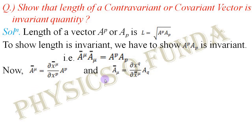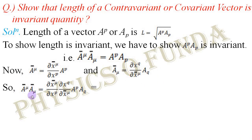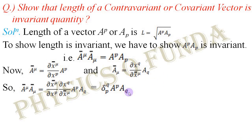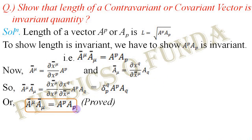Similarly, the transformation equation for the covariant vector is Ā_μ = (∂x^q / ∂x̄^μ) A_q. If we multiply these two equations, the left-hand side gives Ā^μ Ā_μ, and the right-hand side gives (∂x̄^μ / ∂x^p)(∂x^q / ∂x̄^μ) A^p A_q. This section is nothing but the Kronecker delta δ^q_p, so we have δ^q_p A^p A_q. If q equals p, the Kronecker delta becomes 1; all other values of q give 0. So finally we get Ā^μ Ā_μ = A^p A_p. This is the desired equation.